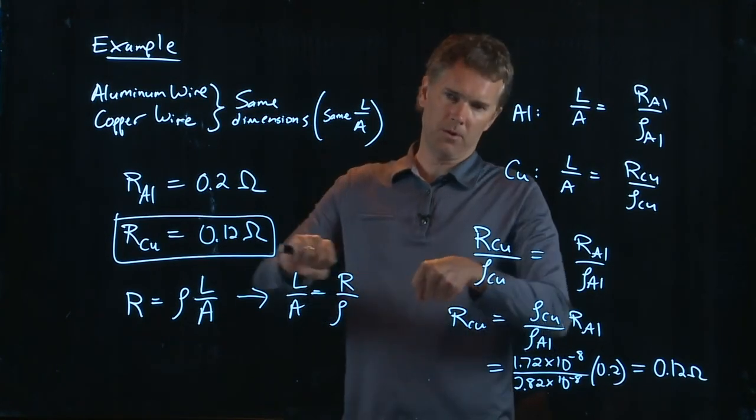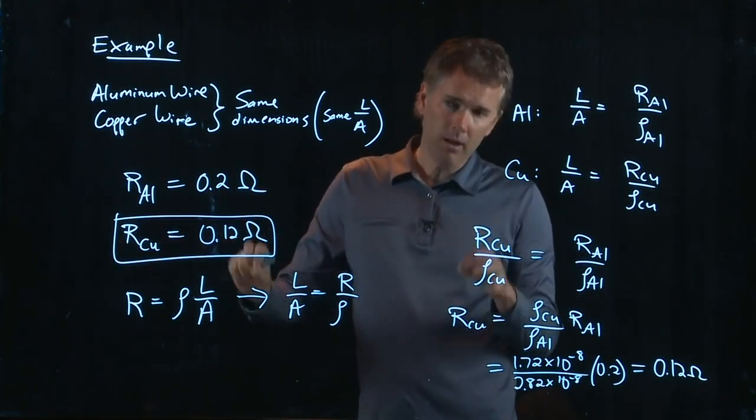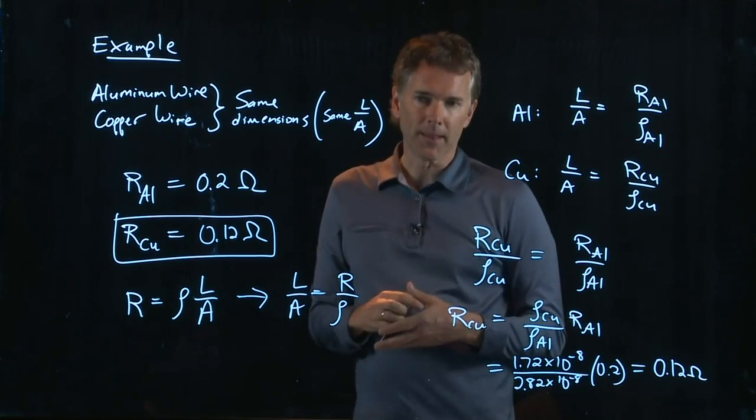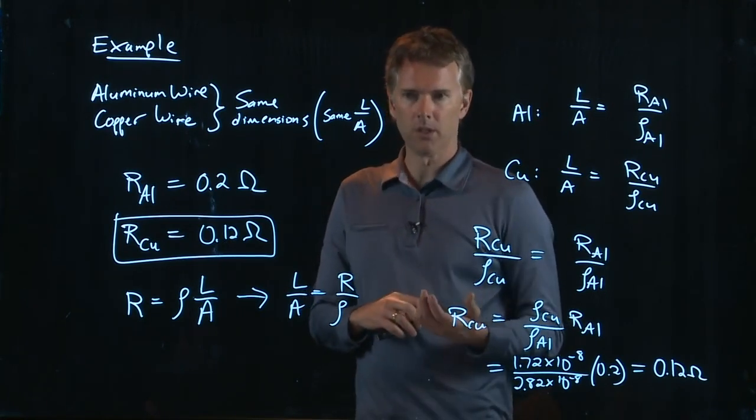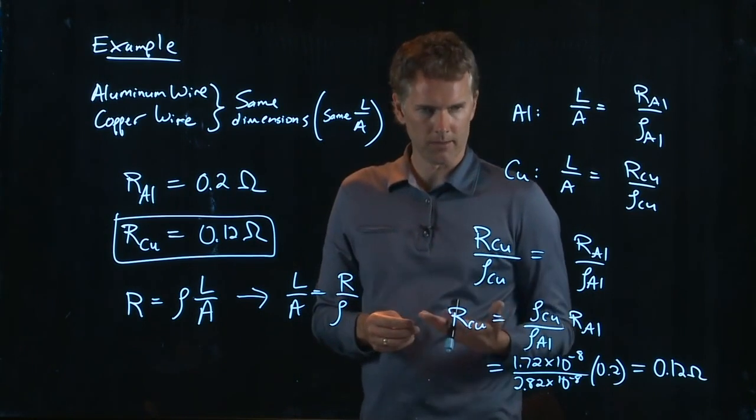And so when you go to Home Depot and you buy a big long extension cord, those cables that are inside the thing, those are going to be made of something like copper. A good conductor. Aluminum turns out to be not a very good conductor.